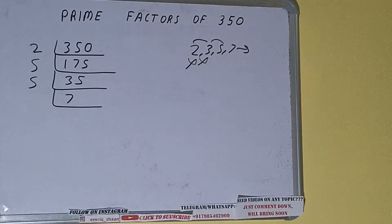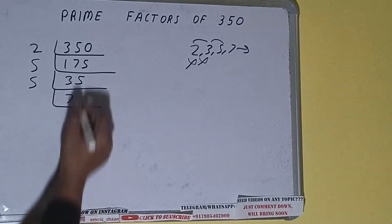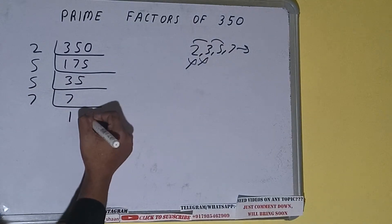Now is 7 divisible by 5? The answer is no because 7 is itself a prime number. So it is only divisible by itself that is 7 and once we do so we'll be getting 1.